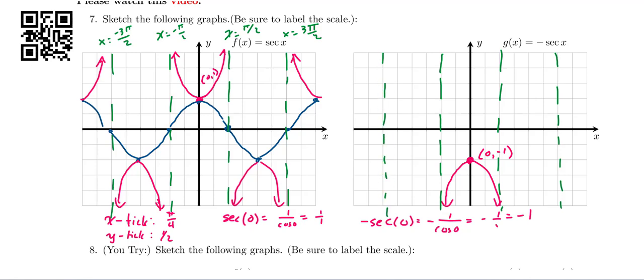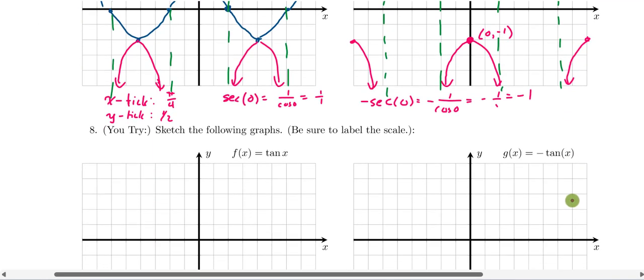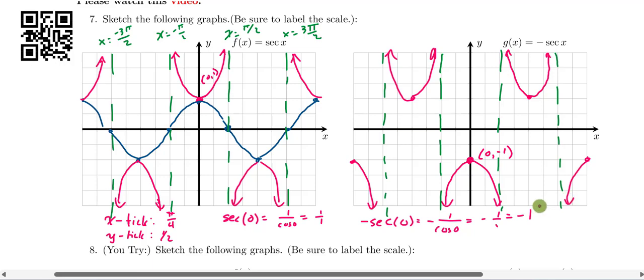And then we can go ahead and finish reflecting this over the y-axis. So here is the graph of minus the secant of x, sketched here. And that's really all there is to it, is reflecting it over the x-axis.